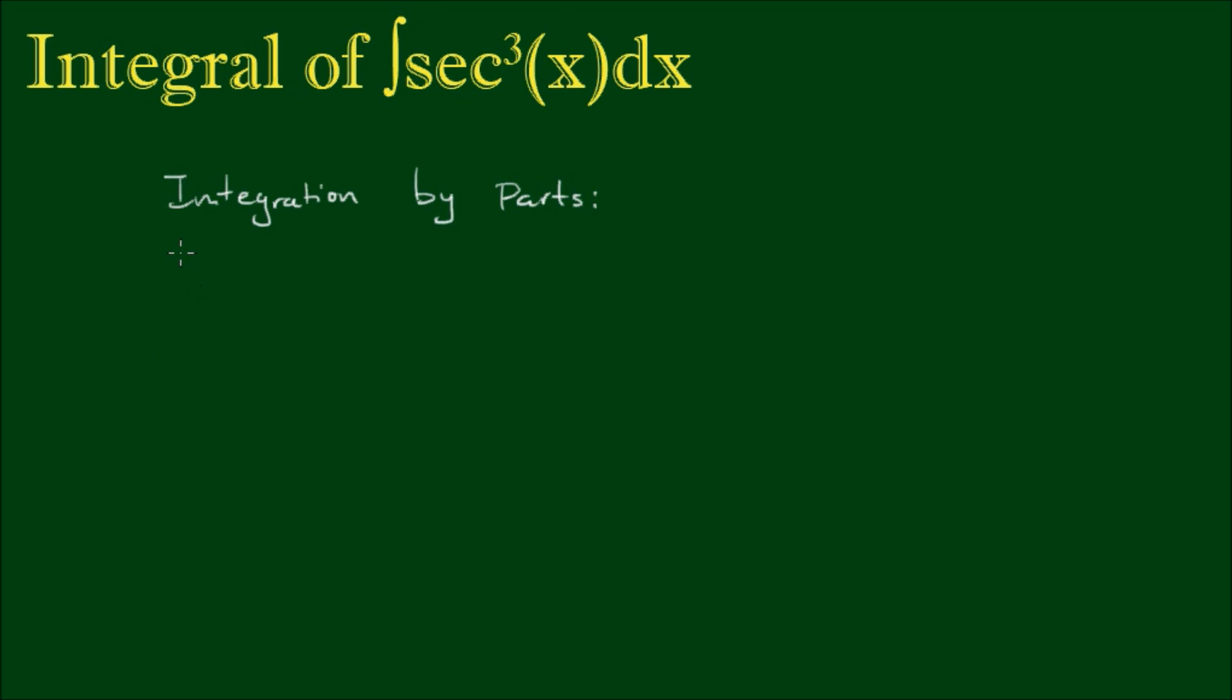So integration by parts is defined as the integral of u dv is equal to u times v minus the integral of v du.